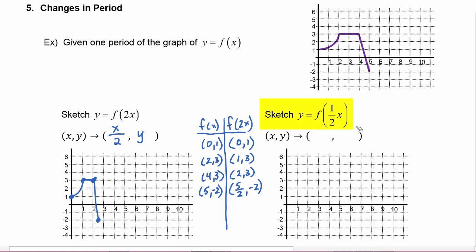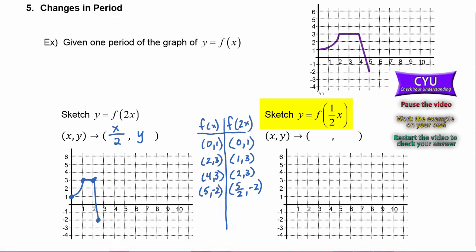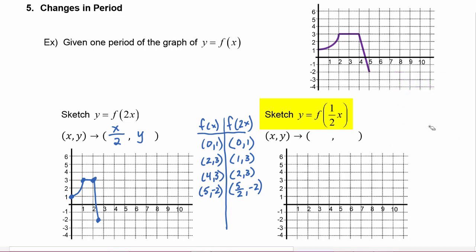Next we have to graph y equals f of one-half x. Pause the video and try this one on your own, then restart when you're ready to check your answers. If we have a point (x, y) on the graph of f, we want to know what that point will become on the graph of f of one-half x. Each x value is going to be divided by the coefficient one-half.